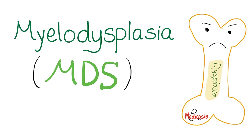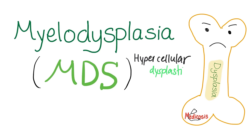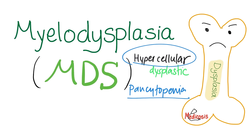Your bone marrow is sad, dysplastic, useless. But don't forget — bone marrow in MDS is hypercellular, full of dysplastic cells, and since the bone marrow is useless, you will have pancytopenia. So in MDS: hypercellular marrow with pancytopenia. This is different from aplastic anemia, because aplastic anemia had pancytopenia with hypocellular marrow.